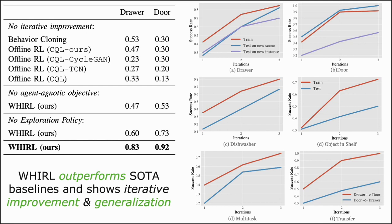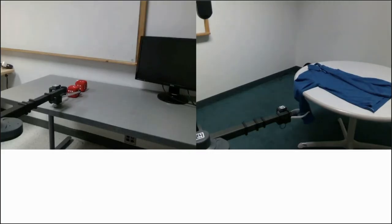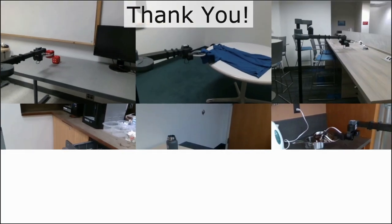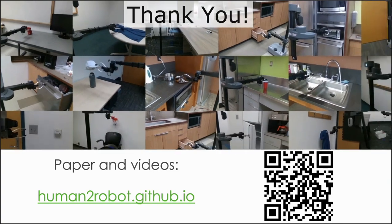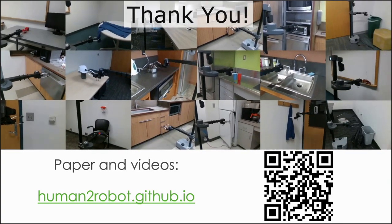We've performed real-world comparisons between WORL and many different state-of-the-art baselines, and see that all of the components of our approach — for example, the iterative improvement, the agent-agnostic cost function, and the exploration policy — are important. From the plots, we can see that success definitely improves with more interactions in the real world. For more information, we encourage you to visit our website as well as our paper.